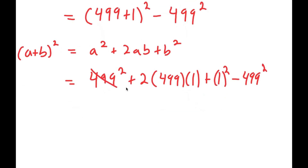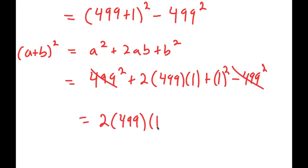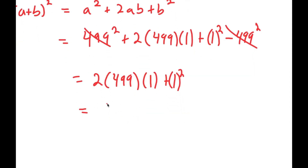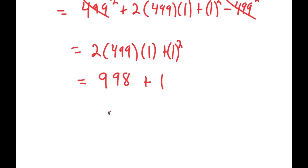Now I can cancel out 499 squared and negative 499 squared, so I'll be left with 2 times 499 times 1 plus 1 squared. 2 times 499 is 998, times 1 is just 998, and plus 1 squared which is plus 1, and this is equal to 999.